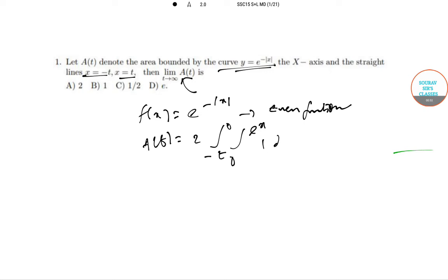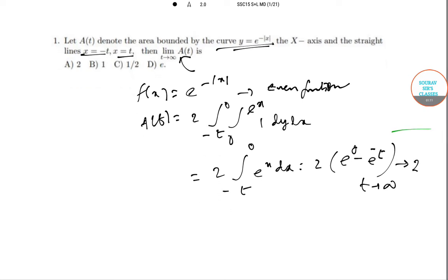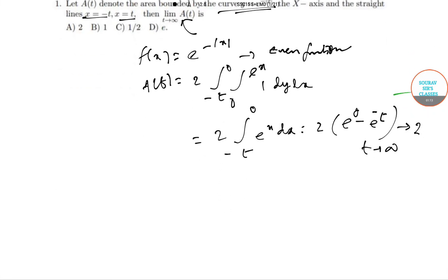From -t to 0, this is e^x dx. You can just put e^0 - e^(-t), which tends to 2 as t tends to infinity. So simply A(t) is in this case...